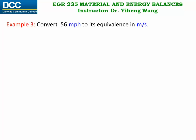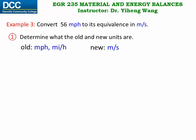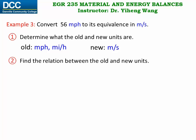Let's look at this example. We need to convert 56 mph to its equivalence in meters per second, and this is a quantity of speed. This is an example showing that sometimes multiple equalities and multiple conversion factors are needed during unit conversion. In this problem our old unit is mph and our new unit is meters per second.